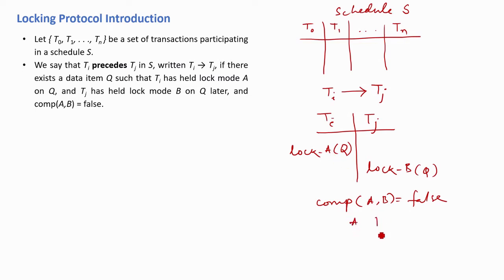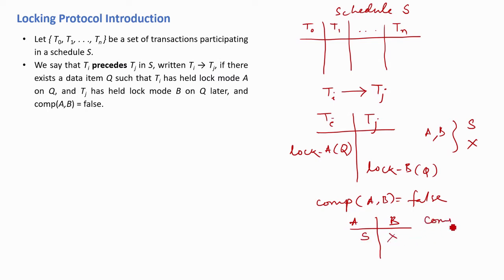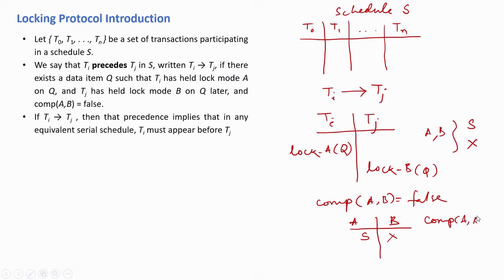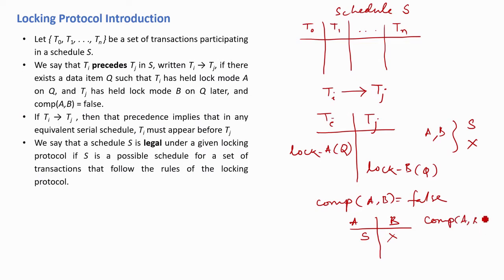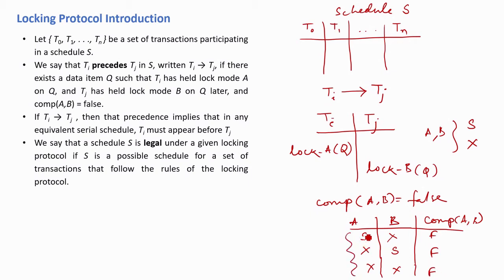The values of A and B can be either shared lock or exclusive lock. The compatibility of A and B is false when A is shared and B is exclusive, or A is exclusive and B is shared, or both A and B are exclusive. These are the possible combinations where compatibility(A, B) equals false.